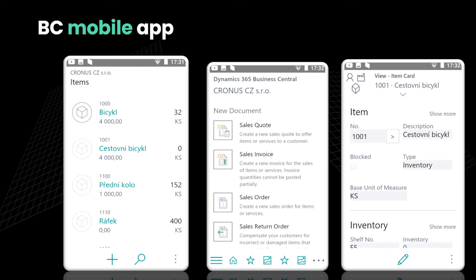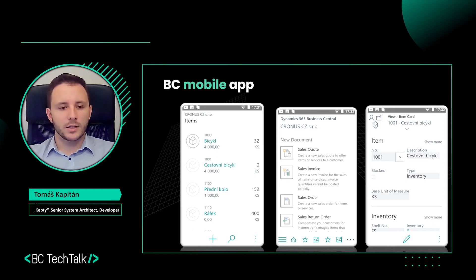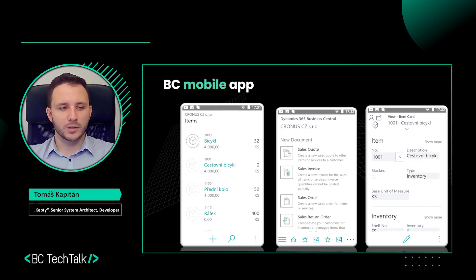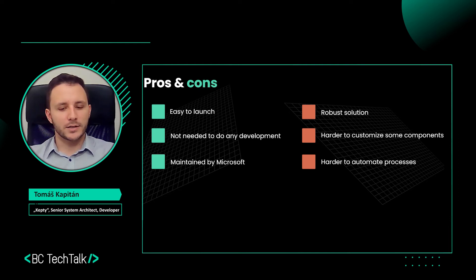I hope that everybody knows how the standard application looks, what can be achieved with it, and for which industries and purposes it is suitable. I don't want to go into detail on every functionality of the standard application — there are definitely good resources from Microsoft about how you can build pages for usage in the mobile application. So let's look at some pros and cons. The main advantage of the standard Business Central application is that it is easy to launch — the only thing you need to do is download it from the App Store or Google Play.